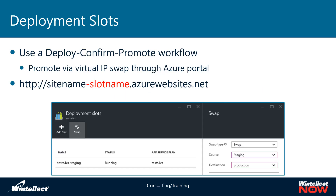With a deployment slot, you simply create it within your App Service and it gets a URL on azurewebsites.net. The URL for your deployment slot will be the name of your site, then a dash, then the name of your slot — making deployment slot URLs very predictable on Azure.